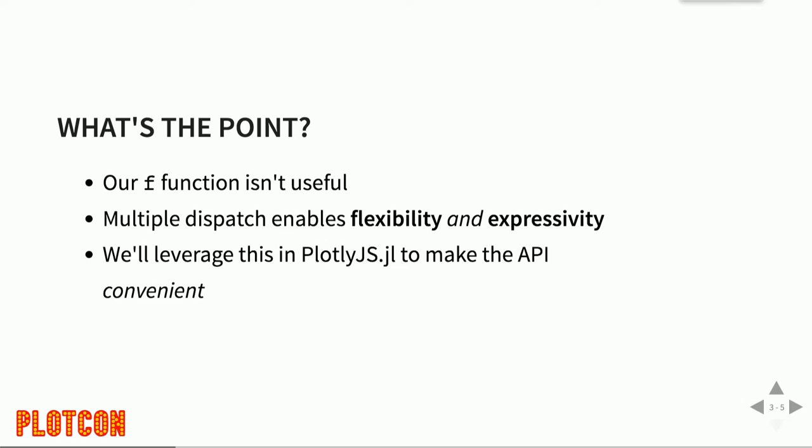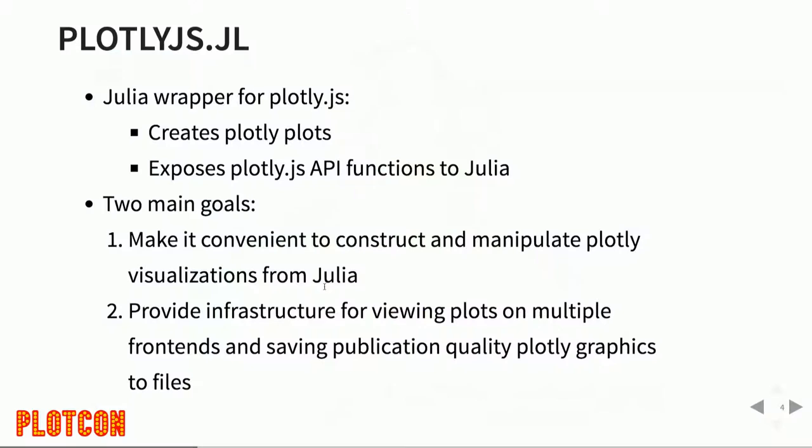The function f is not very useful on its own — I only show it to explain the concept of using types of more than one argument to direct which function gets called. I'm going to leverage this inside the plotly.js.jl library to make the API convenient and natural-feeling for a Julia user. They call one function named plot, and depending on the types of arguments they pass, I can pick exactly what behavior should happen.